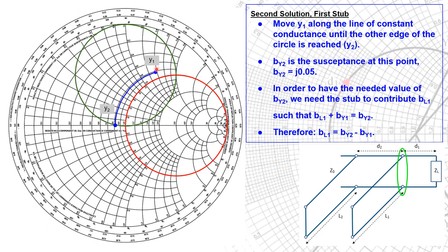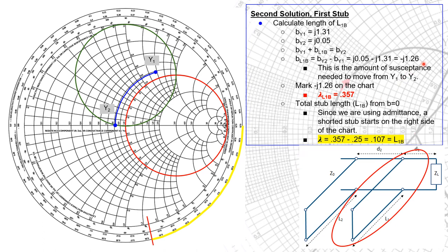Now let's do the second solution. Instead of moving this way from y1, we're going to move the other way, and our y2 is going to be on the circle over on this side, noting our susceptance is positive 0.05. In order to have the needed value of by2, we need a stub to contribute bl1 such that bl1 plus by1 equals by2. Solving for bl1 — it's by2 minus by1. Doing the math, we find that susceptance is minus 1.26 and our lambda is at 0.357. Since we're starting at this point at 0.25, this time we're going to subtract 0.25 from 0.357. That gives us a distance of 0.107, so that's L1b — the second solution for the first stub.